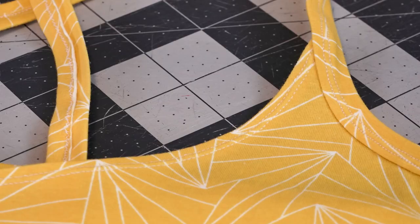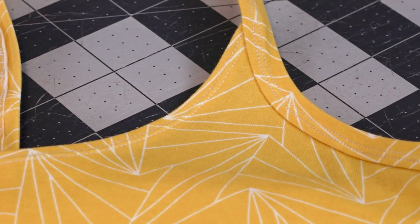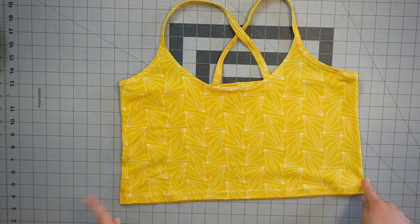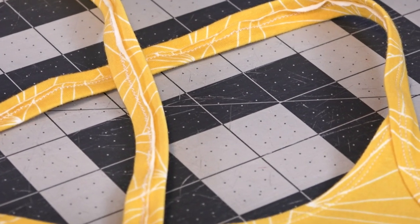I love the Casco Cami because you can make it so many different ways. Here I have it in this beautiful vibrant yellow knit—I cropped it and also did a crisscross on the edges.